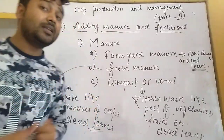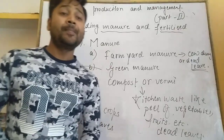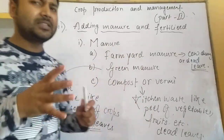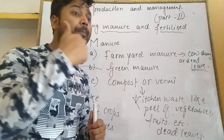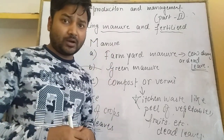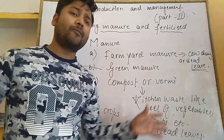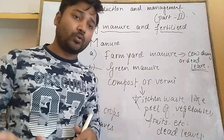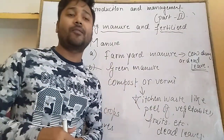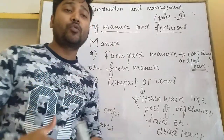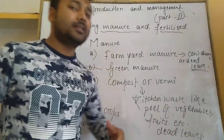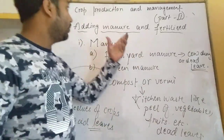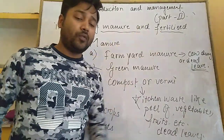One disadvantage of manure is that it does not provide all the sufficient types of nutrients to the plant. Because although it contains all types of nutrients, they are not in adequate amounts — there is only a limited amount of nutrients in the manure. That is the disadvantage of manure. Now let me discuss about the fertilizer.